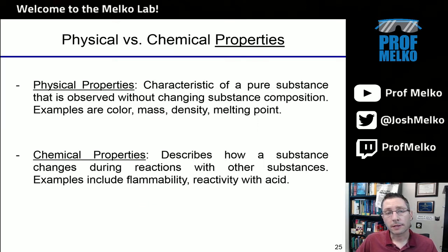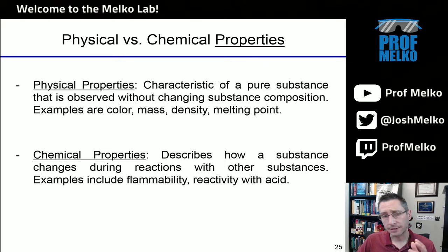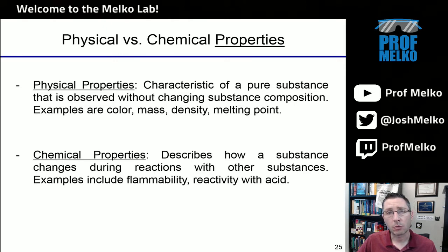We're also going to talk about in this lecture physical and chemical properties, and physical and chemical changes. There's a difference between separating something physically and chemically, or a property that is physical versus chemical, or a change that is physical versus chemical. Physical is something that you can observe without changing the composition — the elemental composition of the substance. So color, mass, density — these are physical properties.